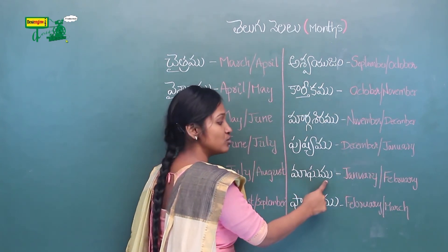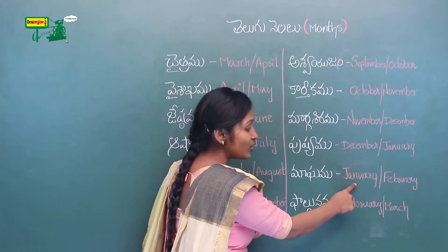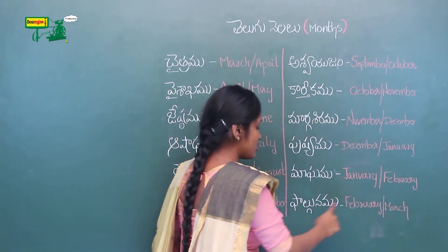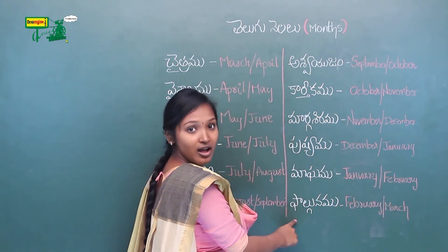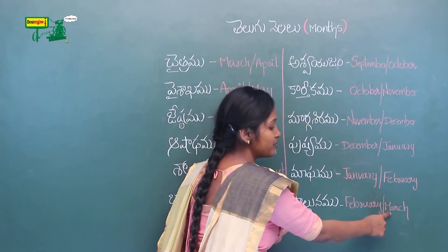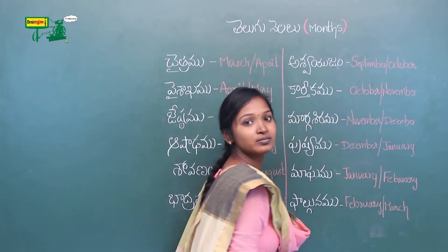Maghamu is January or February. Phalgunamu is February or March.